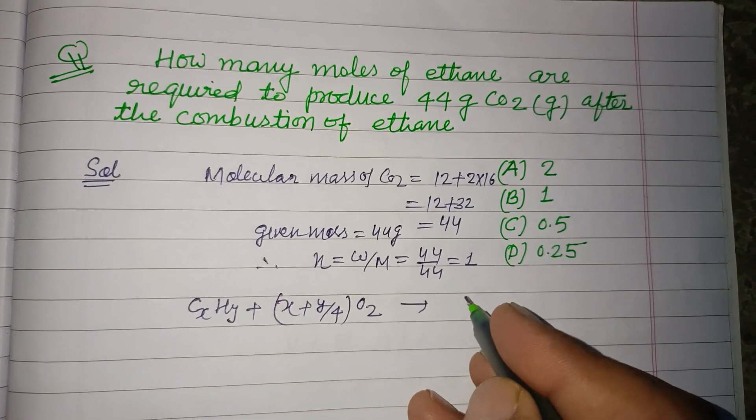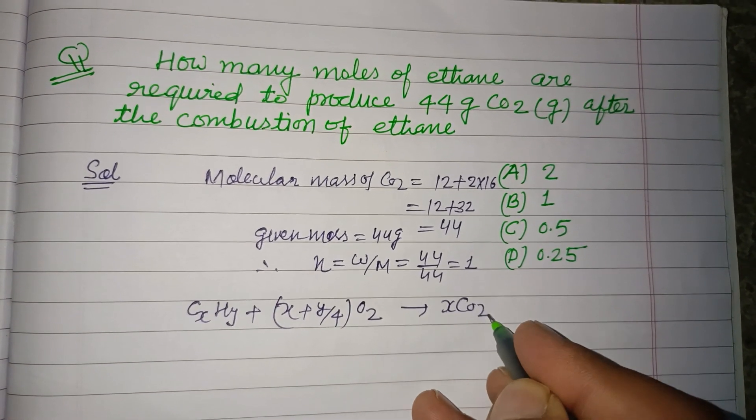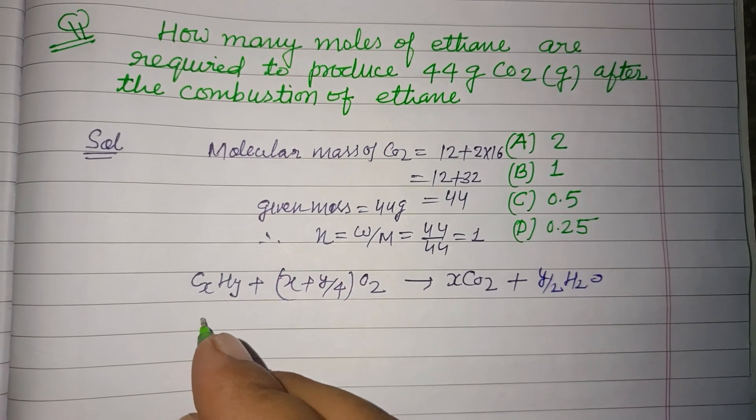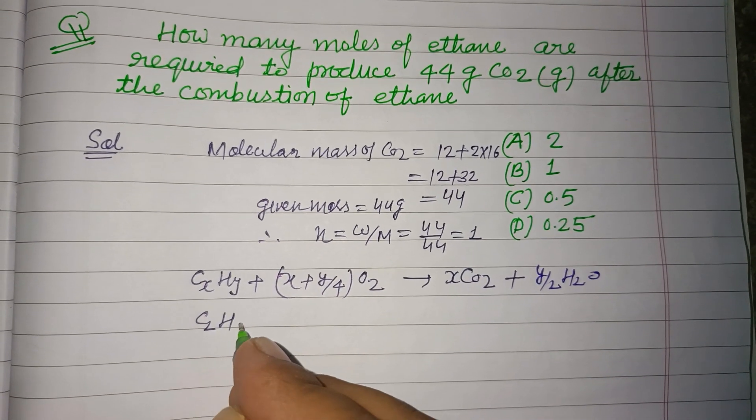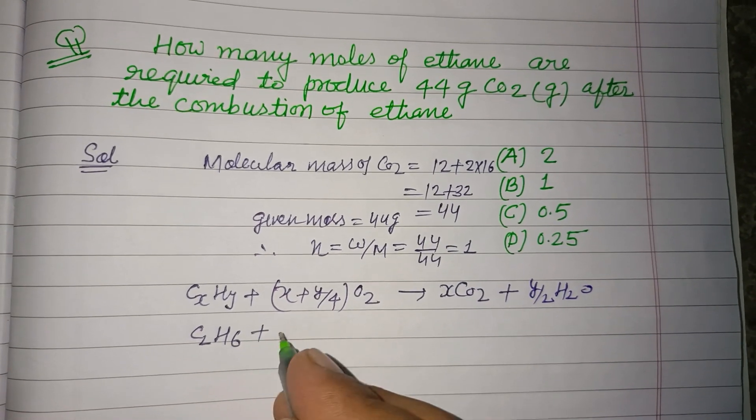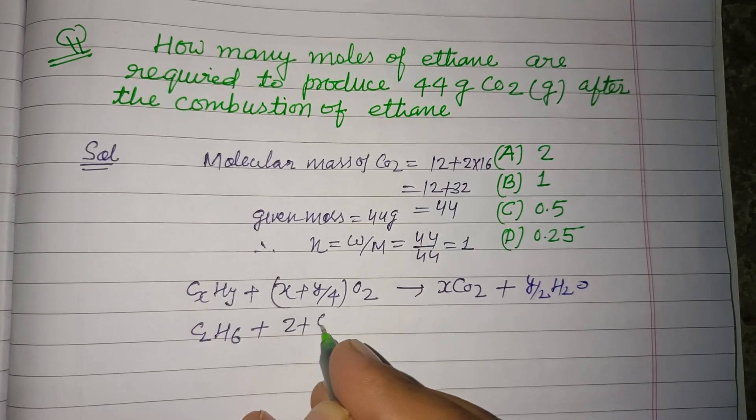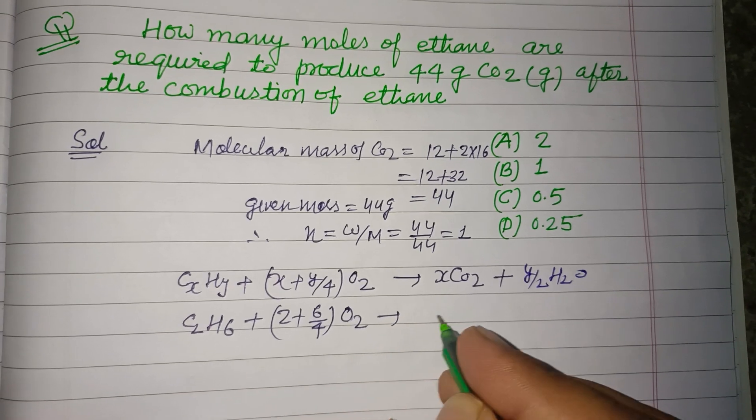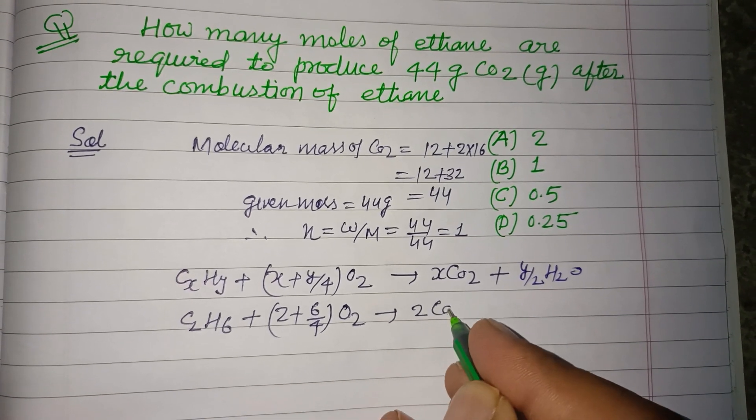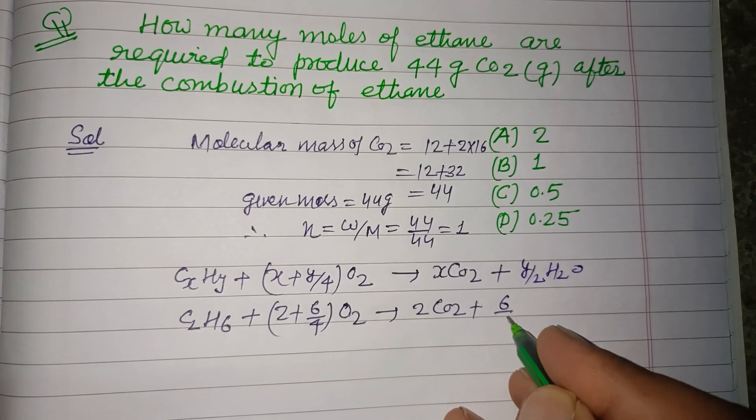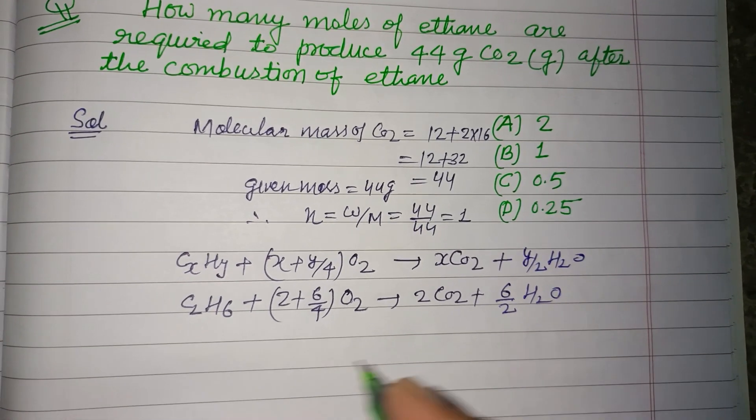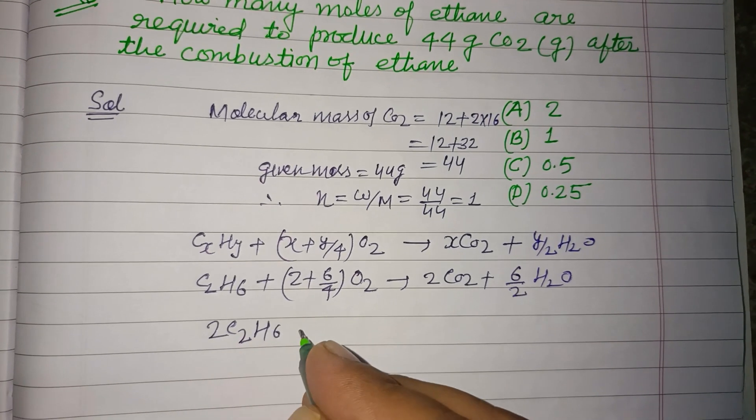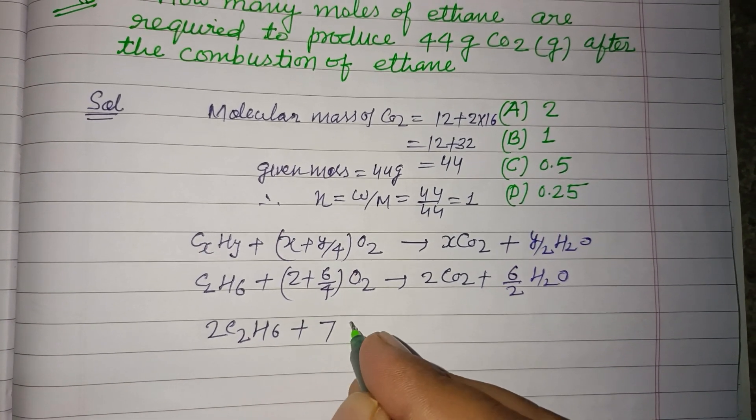Using this, we have ethane C2H6 plus (2 plus 6/4) O2 gives 2 CO2 plus 6/2 H2O. Simplifying this, we get 2 C2H6 plus 7 O2 gives 4 CO2 plus 6 H2O.